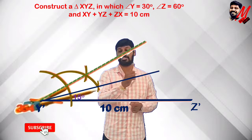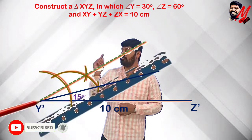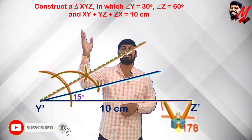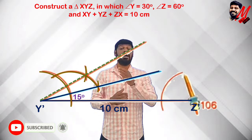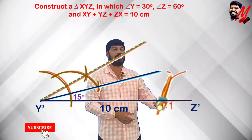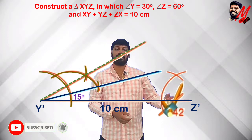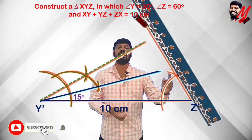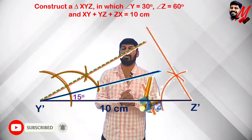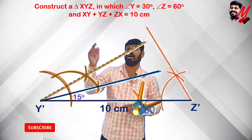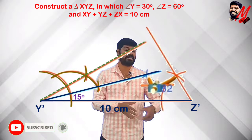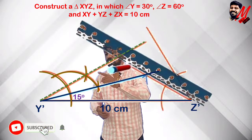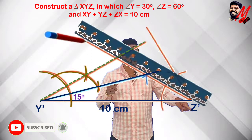So at Y' we extend 15° and at Z' we draw 30°. To construct the angular bisector: place the compass needle, draw an arc, then with the same radius cut the arc from the other end, giving us the intersection point. We join that intersection to get the bisected angle. Here we draw 15° at Y' and 30° at Z'.